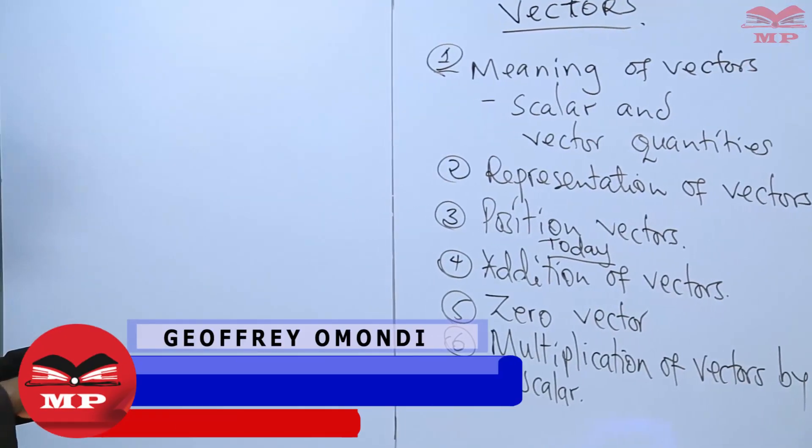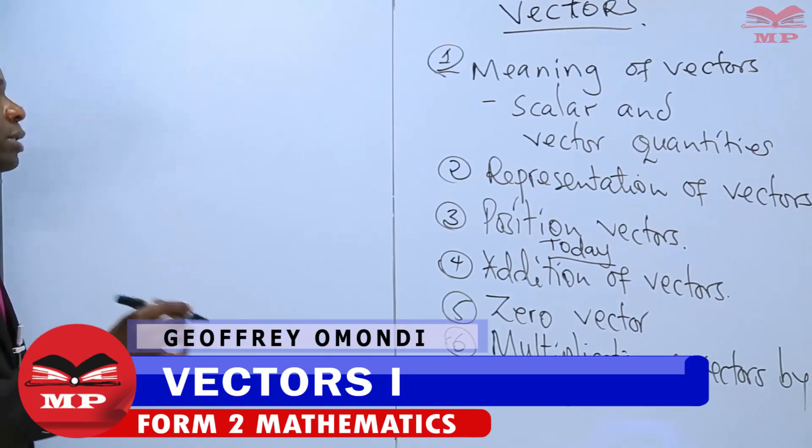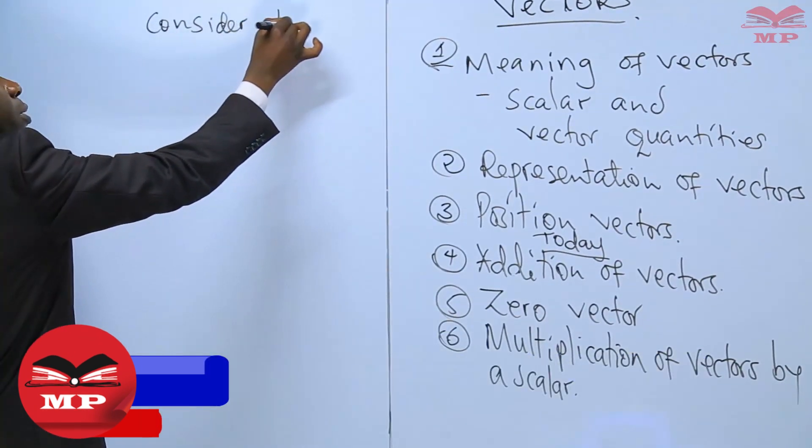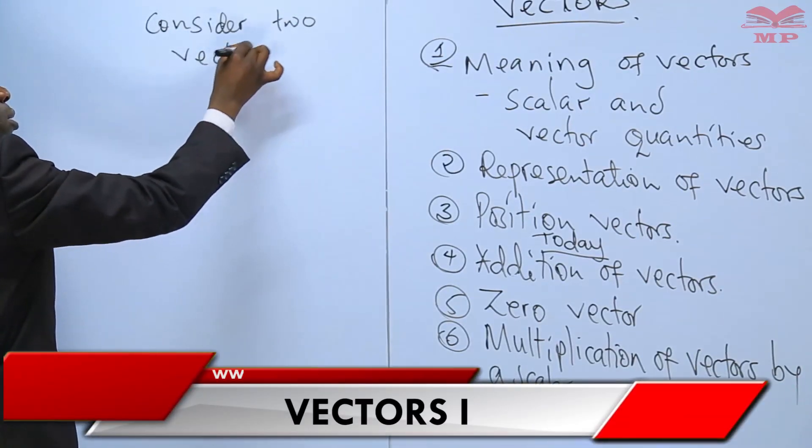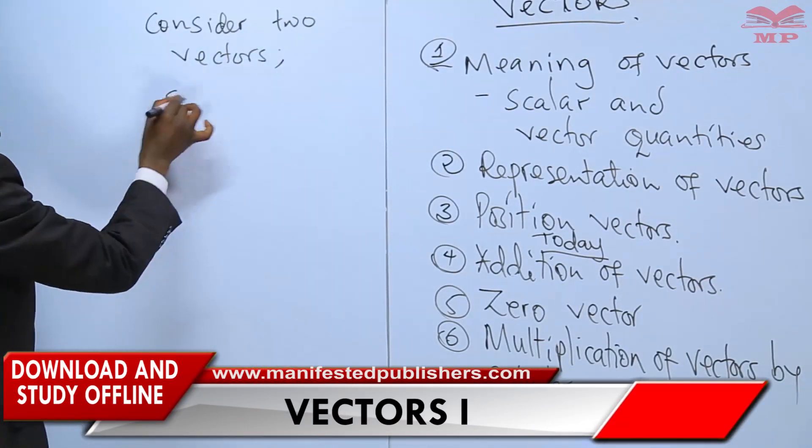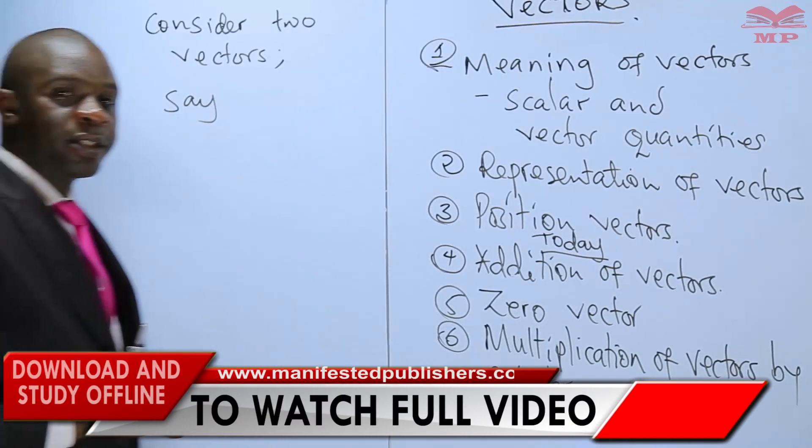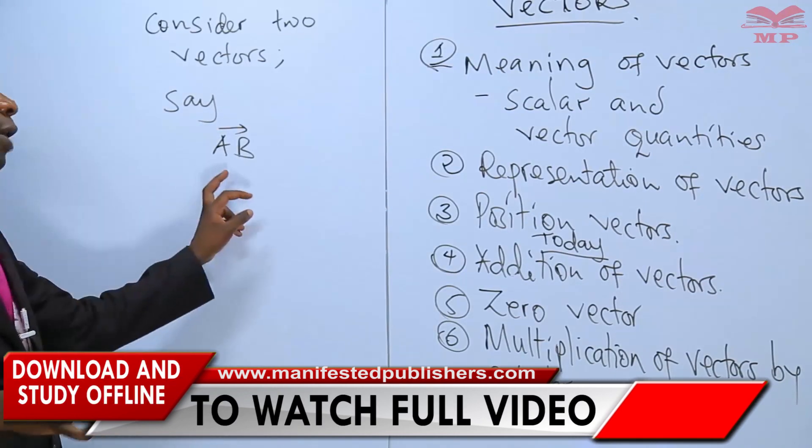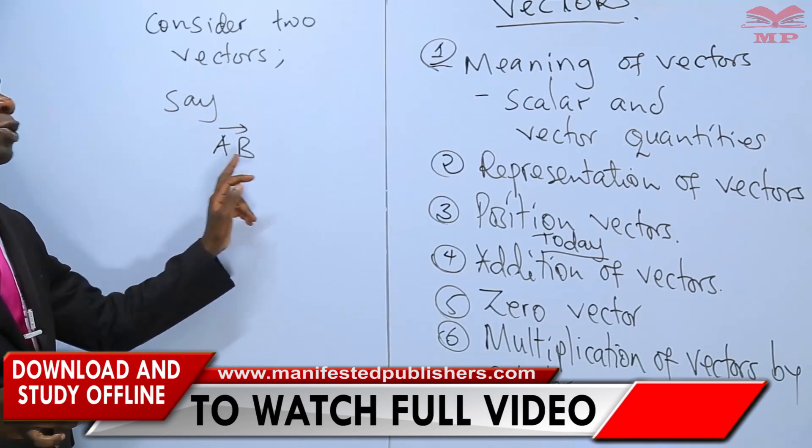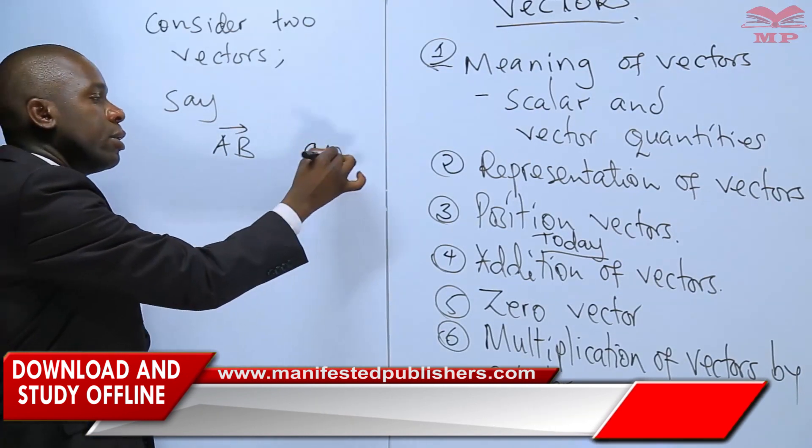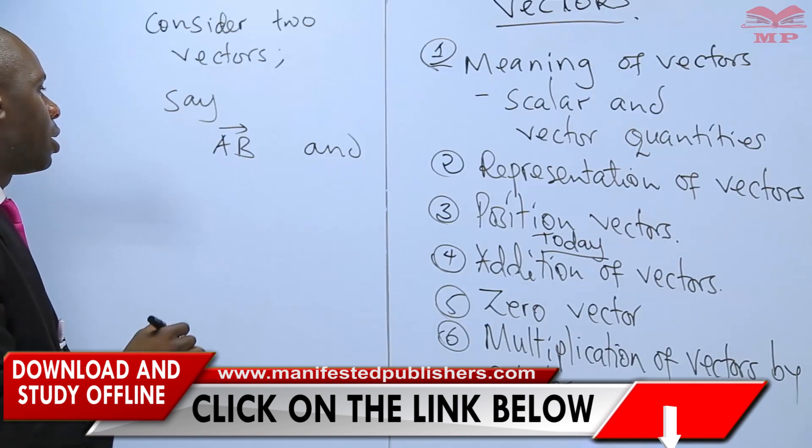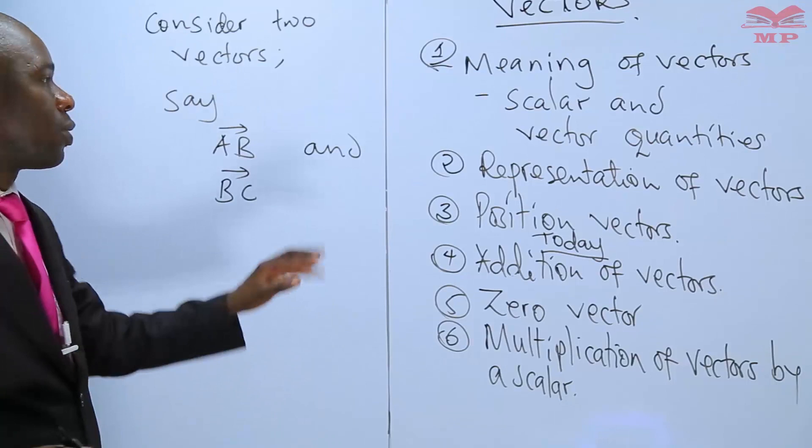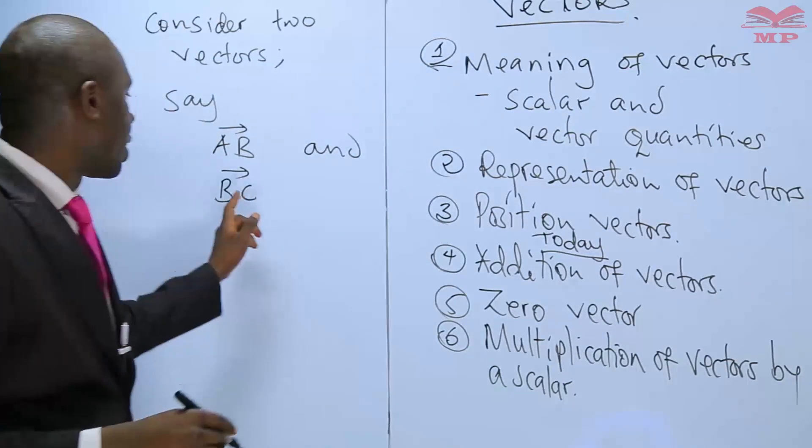In addition of vectors, I want us to consider two vectors. Say vector AB, written with an arrow showing the direction we are moving from A towards B, and vector BC. So I want us to consider these two vectors, AB and BC.